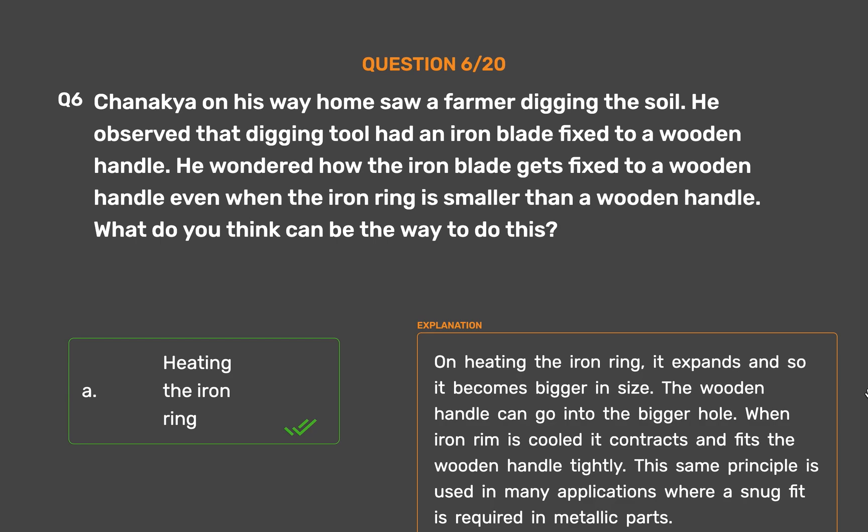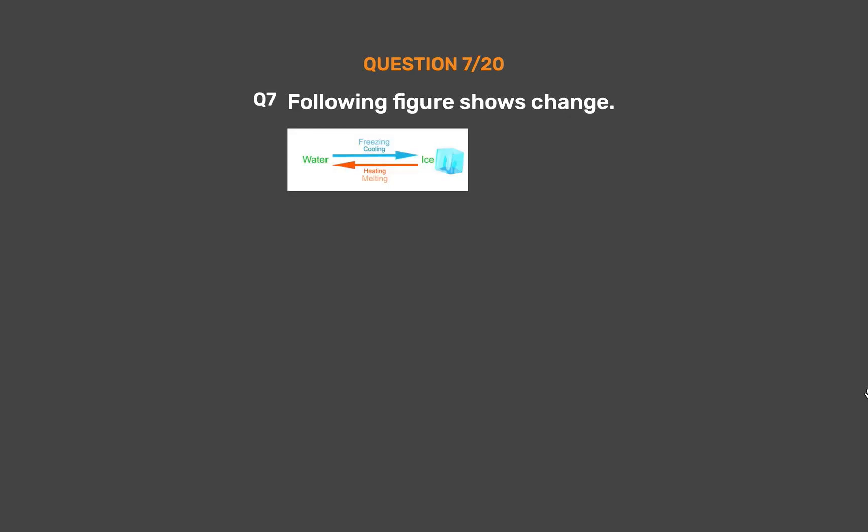On heating the iron ring, it expands and so it becomes bigger in size. The wooden handle can go into the bigger hole. When the iron rim is cooled it contracts and fits the wooden handle tightly. This same principle is used in many applications where a snug fit is required in metallic parts.